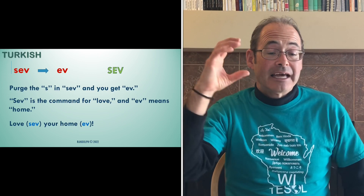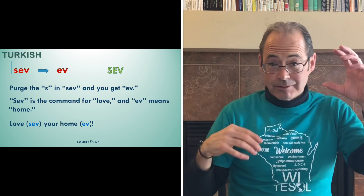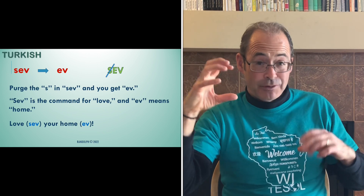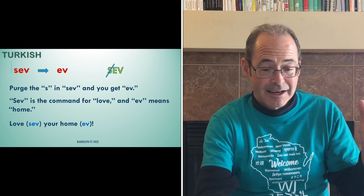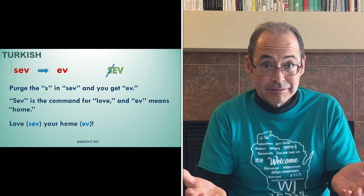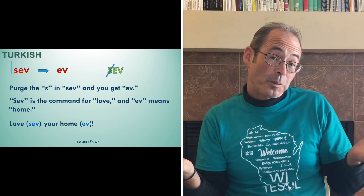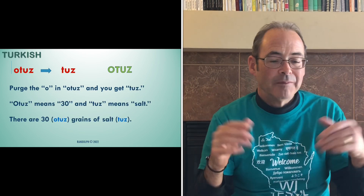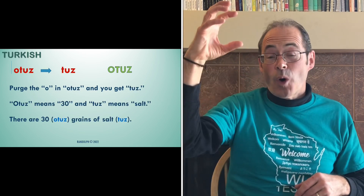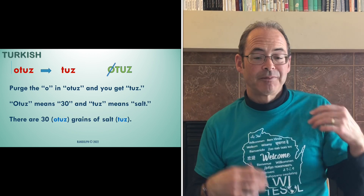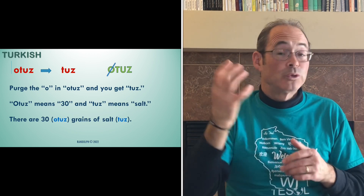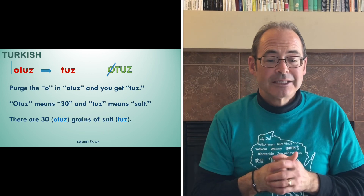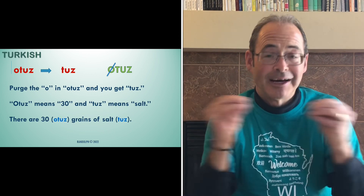Now let's take a look at a totally different language, syntactic-wise: Turkish. You can take a word like 'sev' and 'ev.' Purge the S in 'sev,' you're left with 'ev.' 'Sev' is the command to love, and 'ev' means home. So: love your home — there's a neat connection there. And here's a funny one: 'otuz' and 'tuz.' Purge the O in 'otuz,' and you get 'tuz,' which is salt. 'Otuz' means 30, and 'tuz' is salt. So there are 30 grains of salt — you can find a connection there somehow.